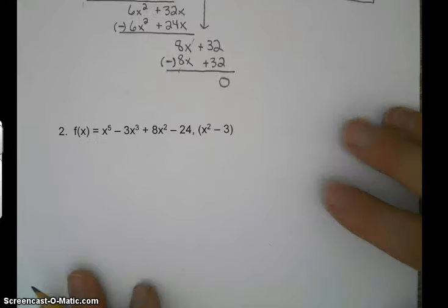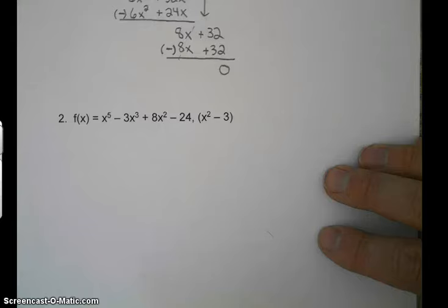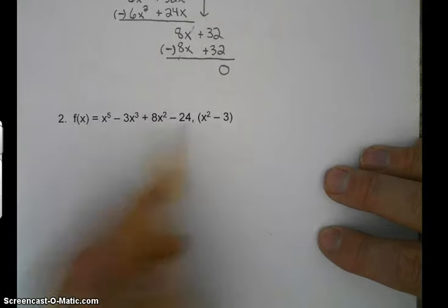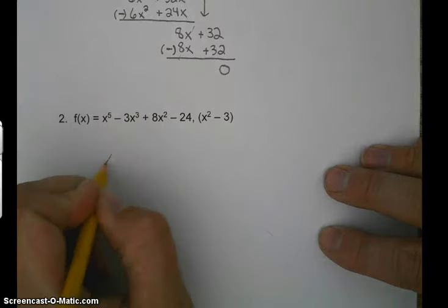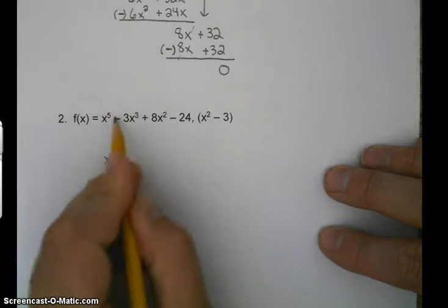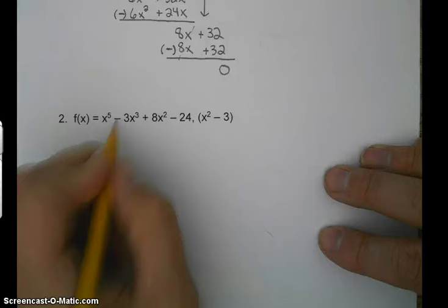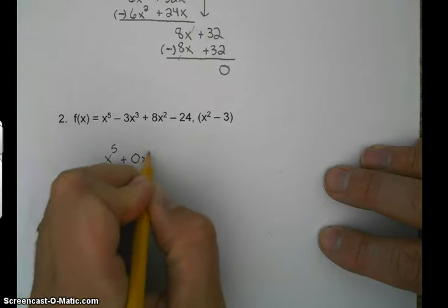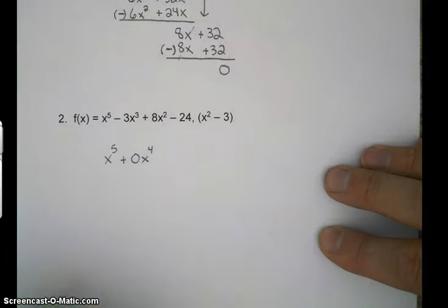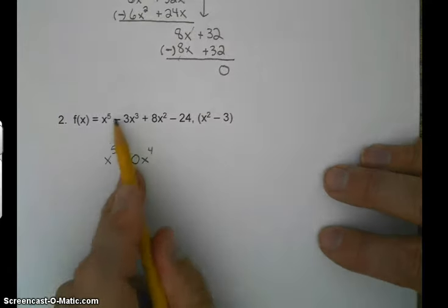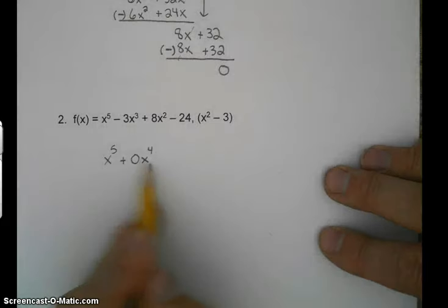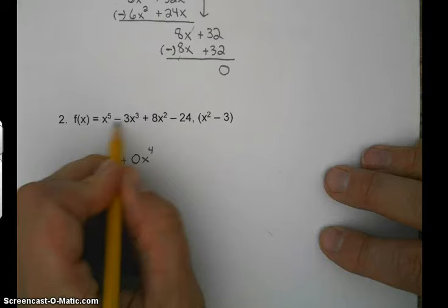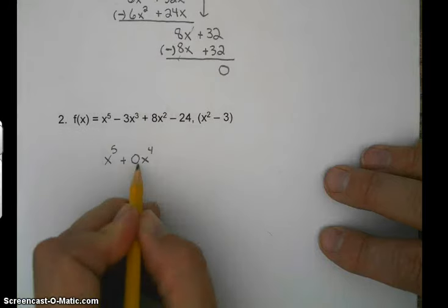Let's look at number 2. Remember, we have to order these in descending order. So what you notice is we have x to the 5th, but there's no x to the 4th. So what we're going to place in here is a 0x to the 4th. We're going to make it appear. Because what made the x to the 4th go away? Well, times 0, of course. So we're going to have to fill in these blanks with 0.